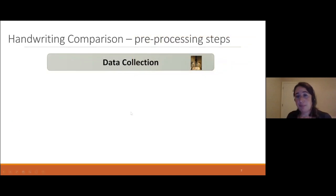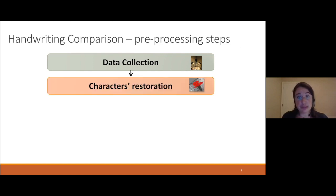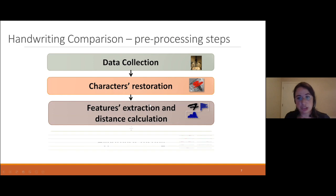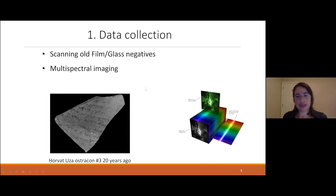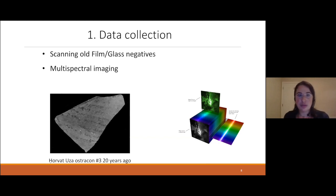We decided to perform data collection first, because when we started, no digital data was available — only films and glass negatives. So we started collecting and imaging them. Later, we restored the characters of those inscriptions in order to address our big question: how to compare two texts and determine whether they were written by the same person. This is what I call hypothesis testing. We have a statistical method to do this.